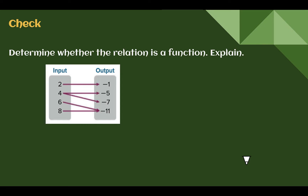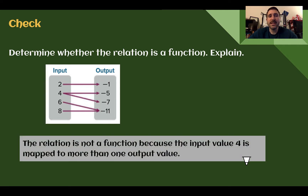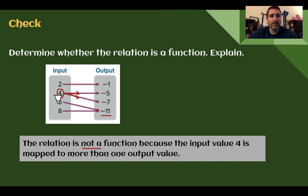Check your understanding: determine whether this relation is a function. This is not a function because of the input value 4 — it's pointing to negative 5 and pointing to negative 7. You might notice negative 11 here, but that's okay: 6 only points to negative 11, and 8 only points to negative 11, so those are fine. It's the 4 that's the problem — it points to negative 5 and to negative 7. Because the input went to more than one output, it is not a function.